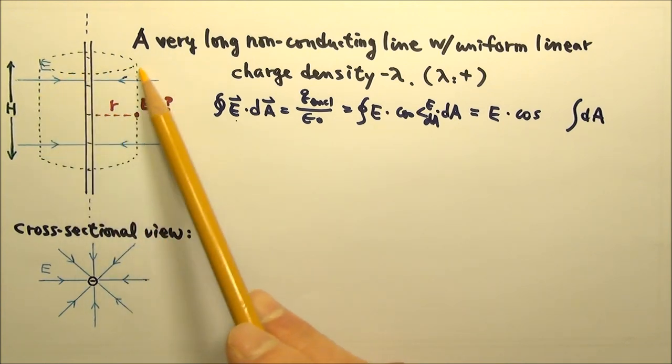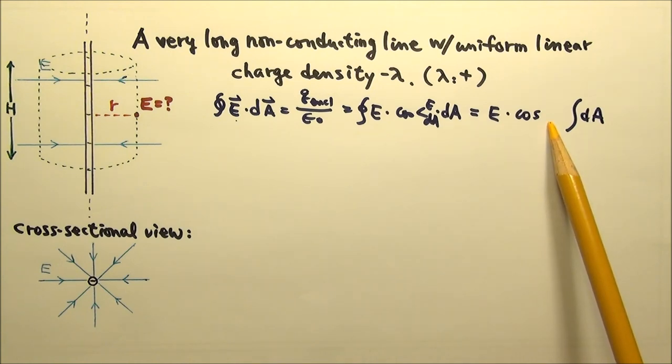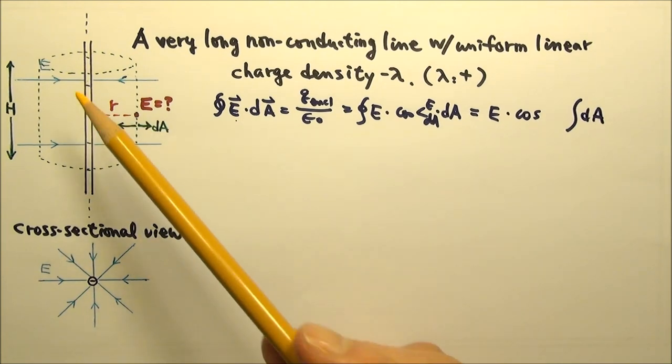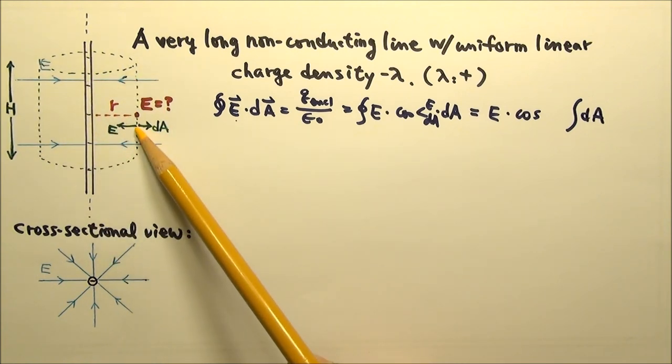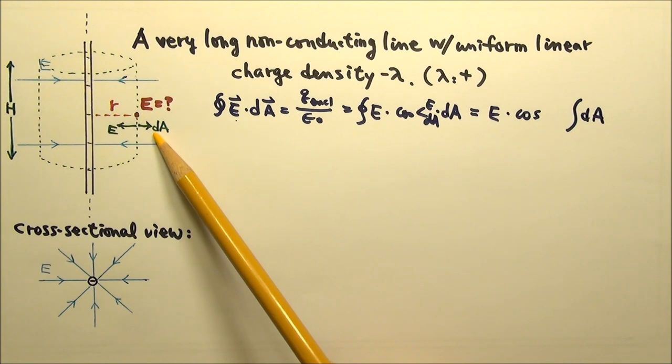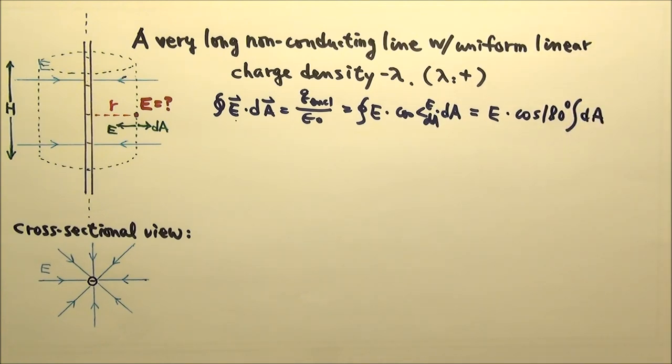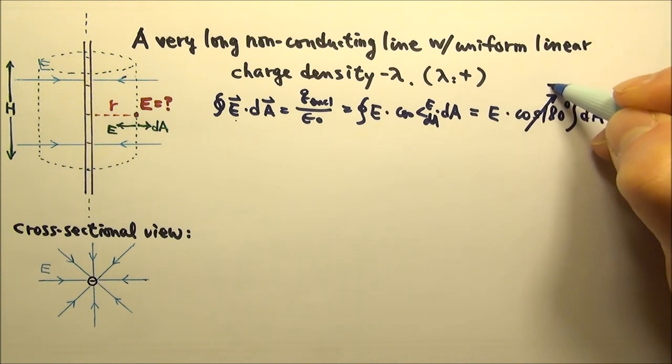For this curved part, E is a constant we can take out. What about cosine? Everywhere on the curved part, the electric field goes radially inward and the outward normal vector dA goes radially outward. So the angle between E and dA is a constant 180 degrees, and cosine 180 is negative 1.